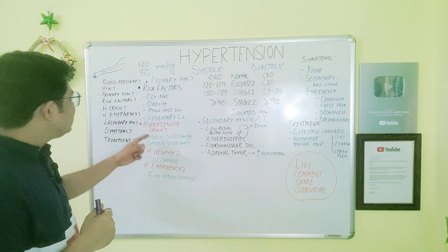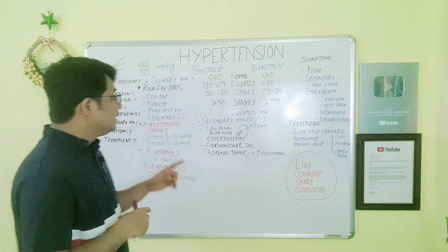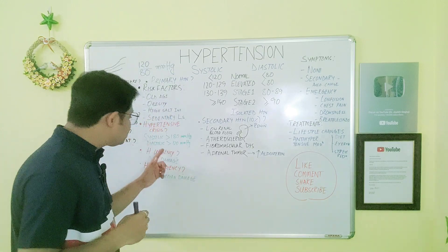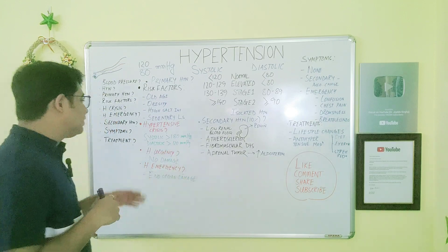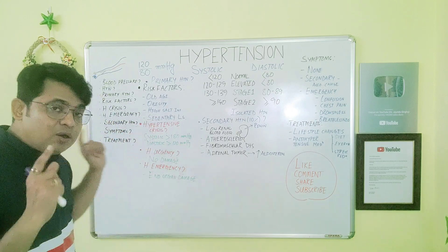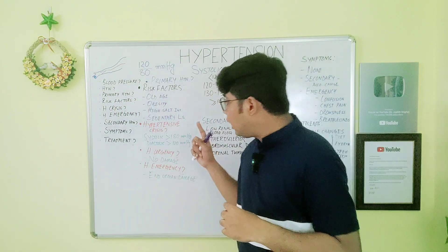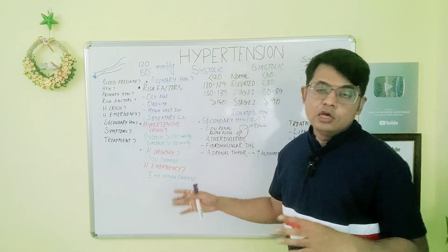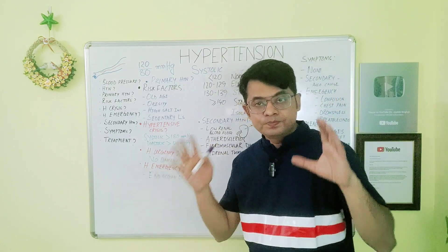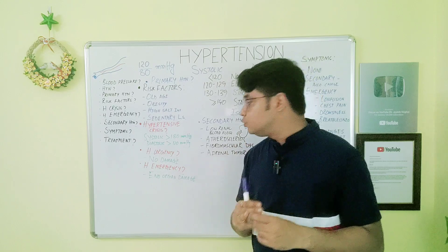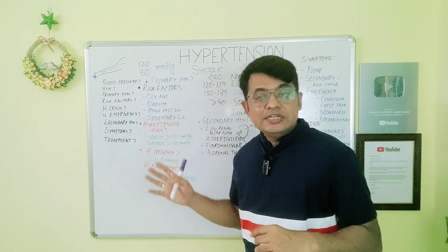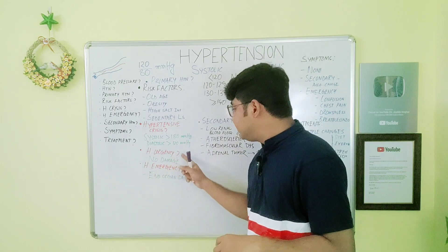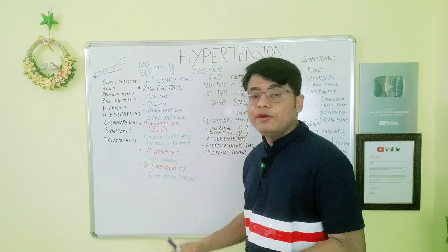Hypertensive crisis is defined as systolic blood pressure greater than or equal to 180 millimeter of mercury and diastolic blood pressure greater than or equal to 120 millimeter of mercury. There are two terms within hypertensive crisis: hypertensive urgency and hypertensive emergency. Hypertensive urgency is when systolic BP is above 180 and diastolic above 120 but there is no serious end organ damage. Hypertensive emergency is when end organ damage is present.